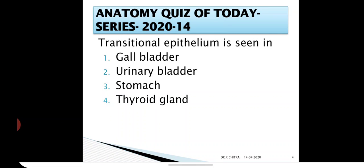Transitional epithelium is seen in: gallbladder, urinary bladder, stomach, thyroid gland.